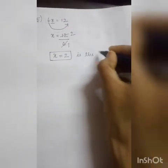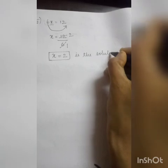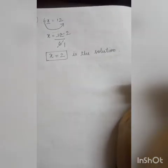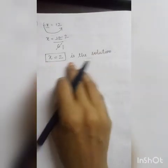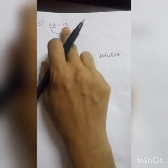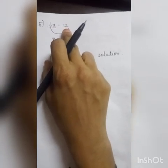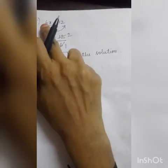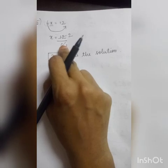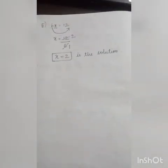We always find the solution when asked to solve. So x equals 2 is the solution for the equation 6x equals 12. Because I brought 6 to that side it becomes division, and we cancelled it.